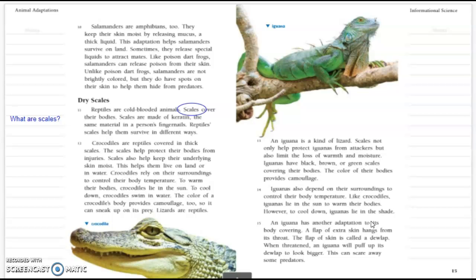we're going to be looking on page 14 and 15 at animal coverings. And we're going to specifically be looking at the word scales. I want you to look at the word scales. I have it circled. And I wrote the question, what are scales? And I want to point out that there's an S on the end of scales. That tells you that there are more than one, correct? So it's going to be plural.